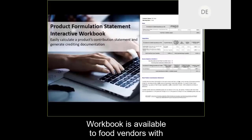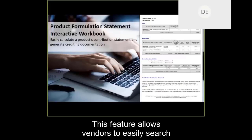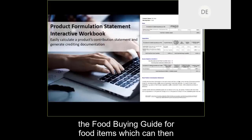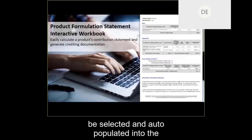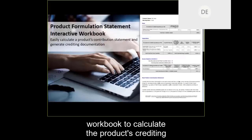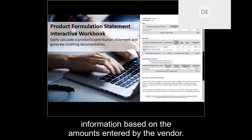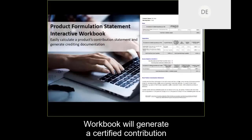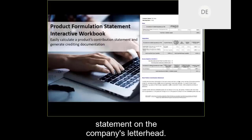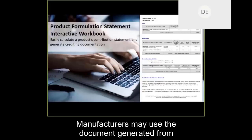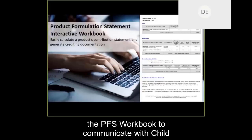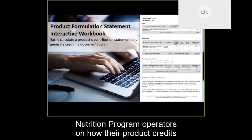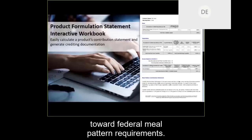Next, the product formulation statement workbook is available to food vendors with registered accounts. This feature allows vendors to easily search the Food Buying Guide for food items, which can then be selected and auto-populated into the workbook to calculate the product's crediting information based on the amounts entered by the vendor. The product formulation statement workbook will also generate a certified contribution statement on the company's letterhead. Manufacturers may use the document generated from the PFS workbook to communicate with child nutrition program operators on how their product credits toward federal meal pattern requirements.